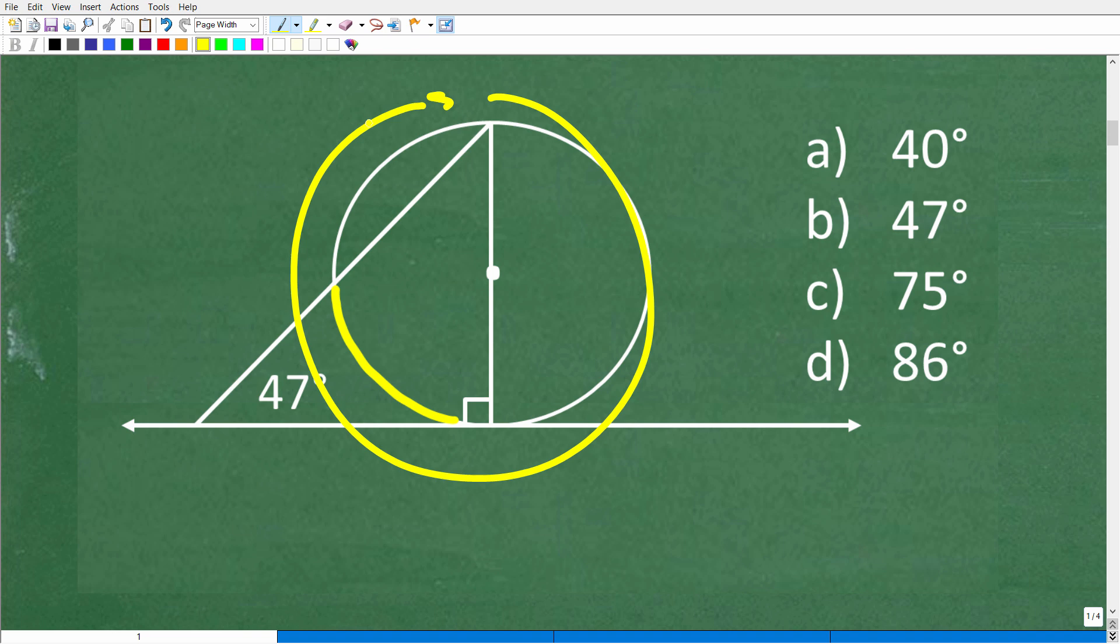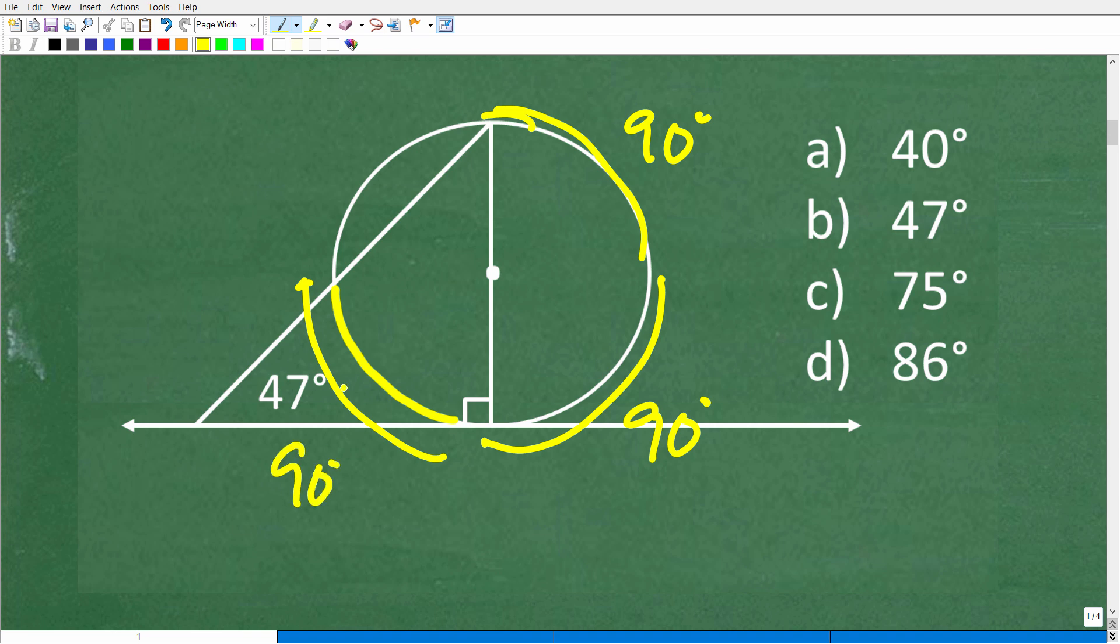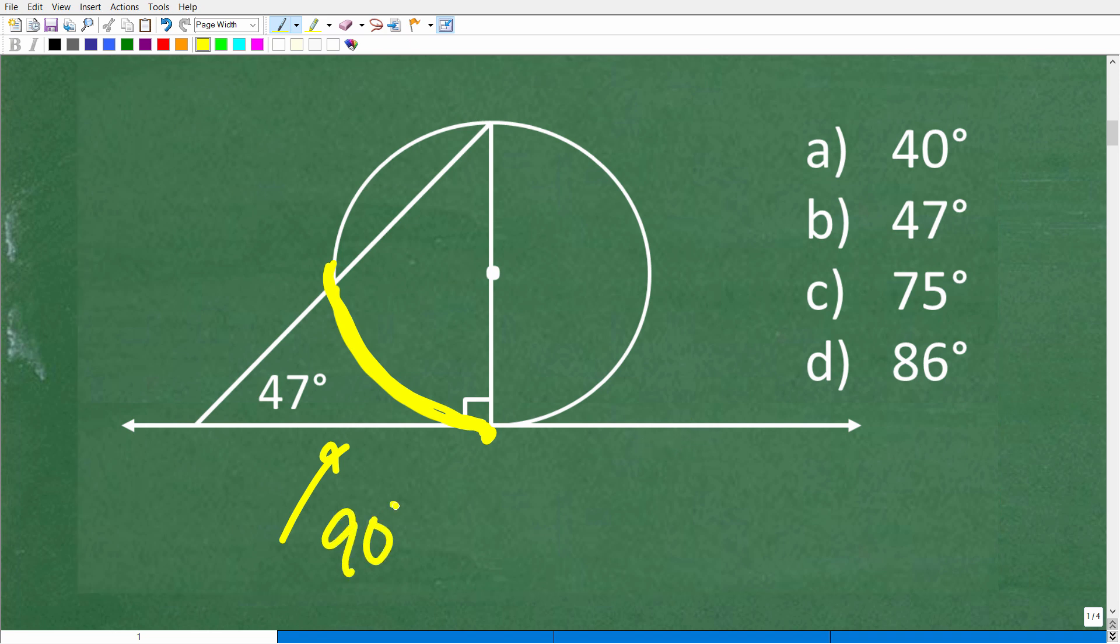A circle, a full circle is 360 degrees. If we kind of think about this circle in terms of quarters, from here to here is 90 degrees, and then another quarter of the circle would be 90 degrees, and then another quarter right here would be 90 degrees, and then another quarter would be 90 degrees for a total of 360 degrees.